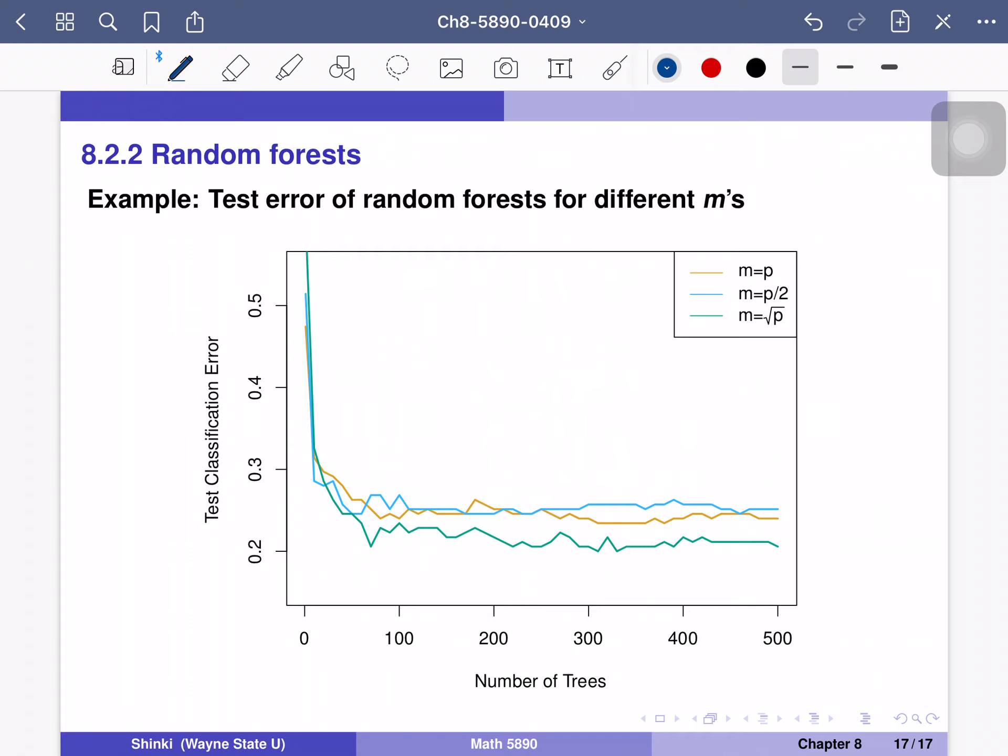So this is the performance, comparing the three different random forests with different ms. So the first one, the orange one, is m equal to p. So this is the bagging of tree method.